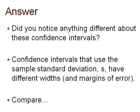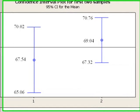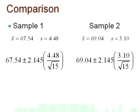Let's compare the first two confidence intervals found based on our first two samples. Here are the two confidence intervals on a graph, and here are the data and the formulas. Since the standard deviation of the first sample is larger than the second one — 4.48 versus 3.10 — the width of the first confidence interval will be larger.